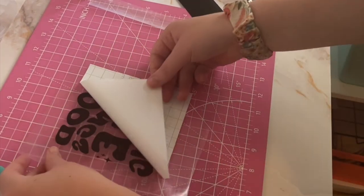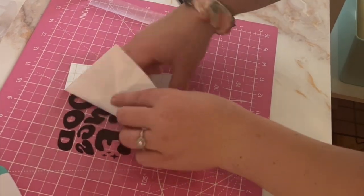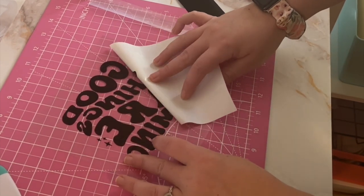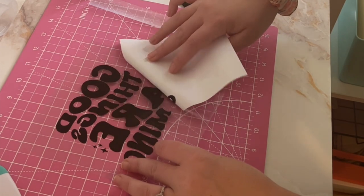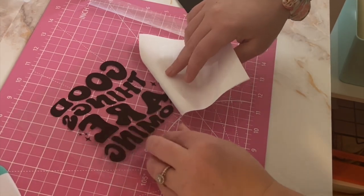Use your scraper tool to really adhere that to the vinyl and then you'll remove the backing of the vinyl. And you can see some of these pieces were starting to come up and like I said I've used this transfer tape before so that's probably the reason, but just take it slow and make sure you don't miss any of those small little bits.